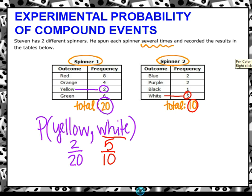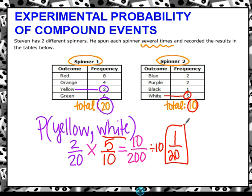To find your compound probability, you do top times top. Two times five is ten. And bottom times bottom. 20 times 10 is 200. I can actually simplify this. I can divide them both by ten. Ten divided by ten is one, and 200 divided by ten is 20. So the probability of this happening is one in 20 trials. If I did this experiment 20 times, one of the times it would happen, which is still pretty unlikely. Definitely not impossible, but unlikely for sure.